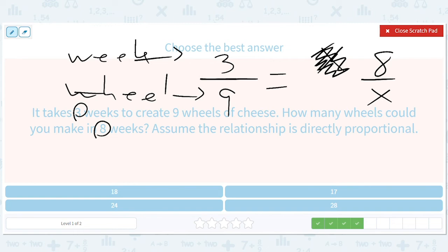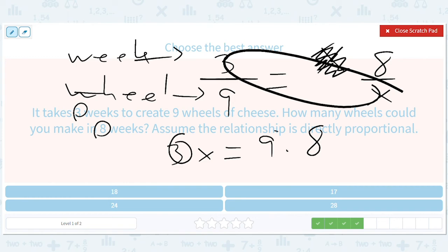They wrote weeks, wheels, and then wheels, weeks to kind of confuse you. So when we do this out, we'll get three times x equals nine times eight. So this is three, this is nine. That goes in, we get three. So we get x equals 24. So you can make 24 wheels in eight weeks.